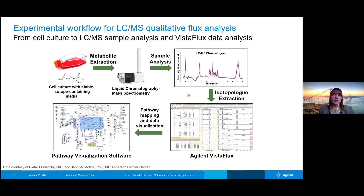Through the Agilent Vistaflux software, we're able to analyze these isotopes and pull them out of the samples. We can see where those isotopic labels ended up. We also have a visualization software where we can take the metabolites found in Vistaflux and map those onto metabolic pathways, so you get a real view of where the isotope labels are going and what pathways they're involved in.